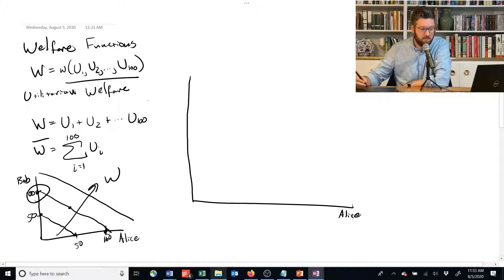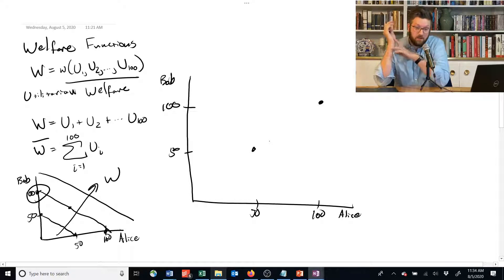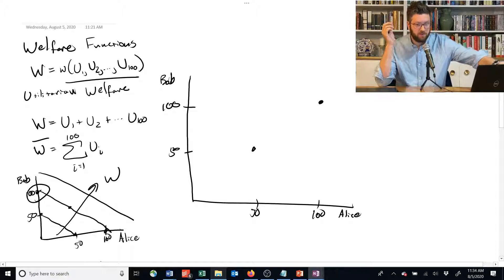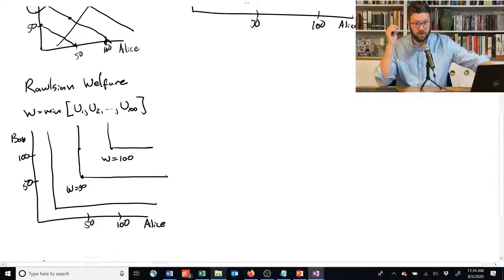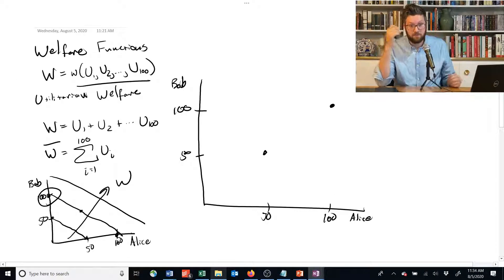Suppose we've got Alice and Bob here, and we've got 100, we've got 50, 50 and 100 again. Suppose we're comparing these two options. Both of them have 50 or both of them have 100. All of these different frameworks would agree that the both having 100 option is better than the both having 50 option.